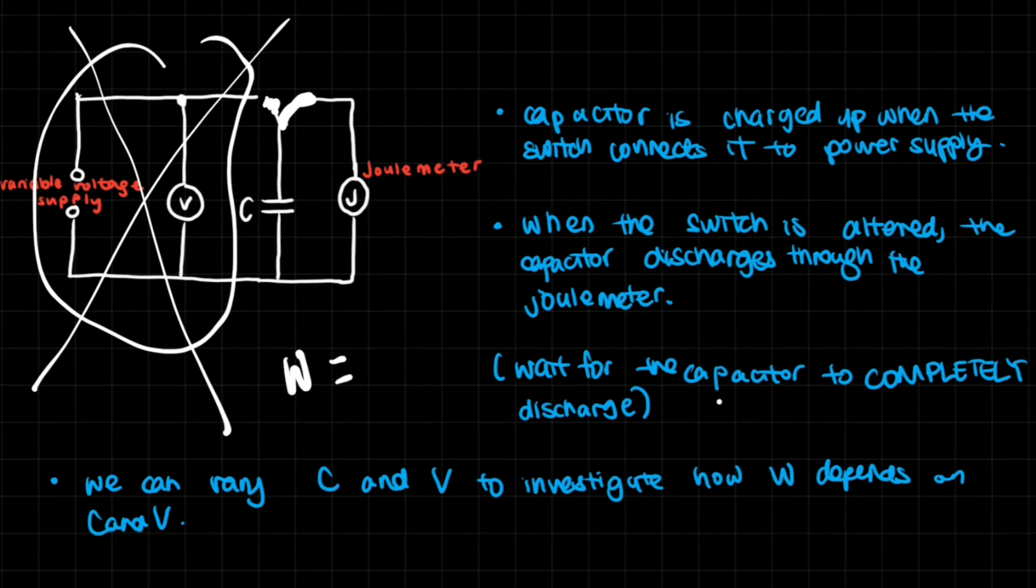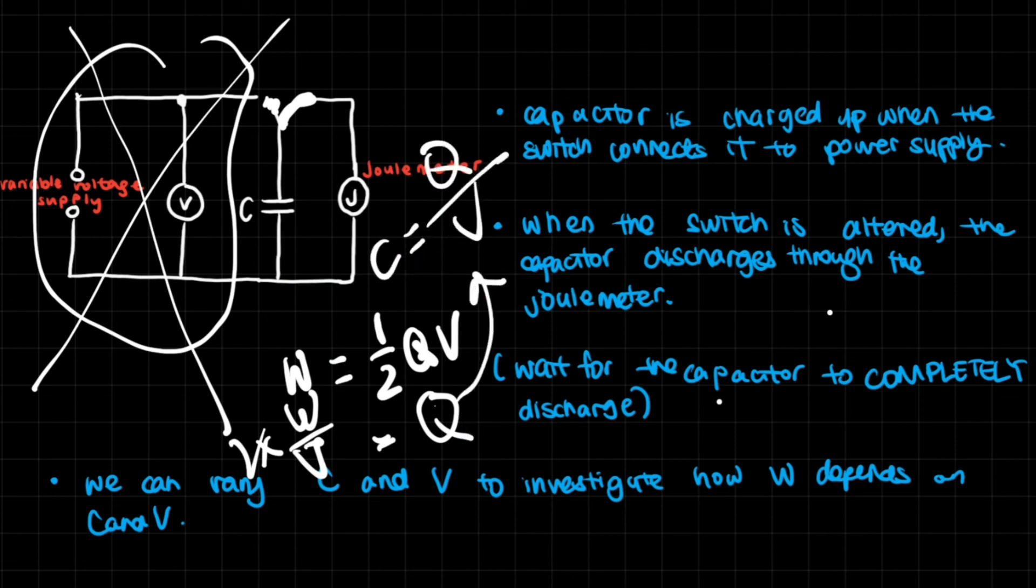So we know that the work done is 1 out of 2 CV. And so QV, which is the charge, right? And basically, we can tell that the Q is going to be work divided by V times 2. And so that we can derive simply from this relationship. Now that we have the amount of charge, we can even get the capacitance because the capacitance is the charge per volt. So this is a simple circuit that if you know two of the values in this, then you can basically get a lot of other values in relation to it. Now, what is important is that you wait for the capacitor to completely discharge so that the joule meter can get the complete amount of energy that was stored by the capacitor.